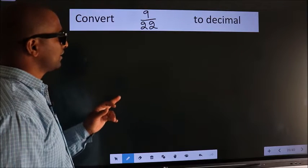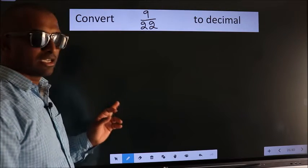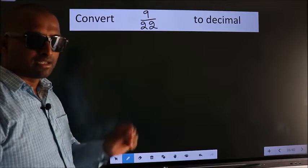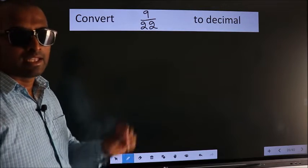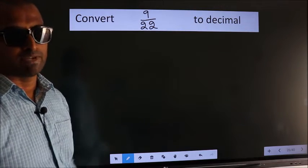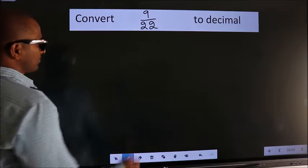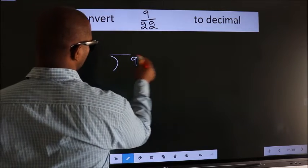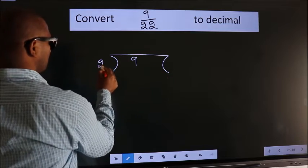Convert 9 by 22 to decimal. To convert this to decimal, we have to divide. To divide, we should frame it this way: 9 here, 22 here.